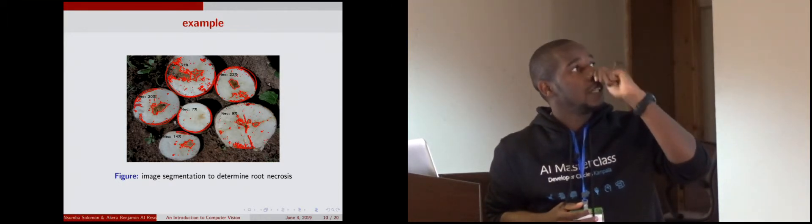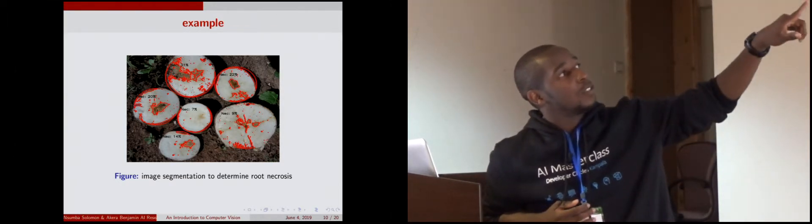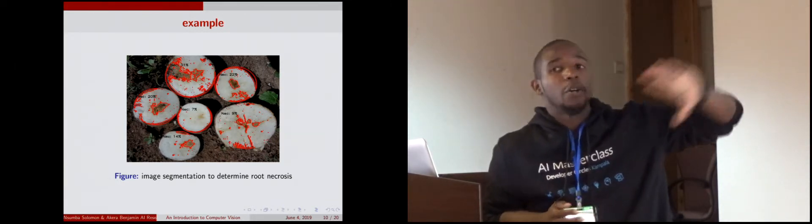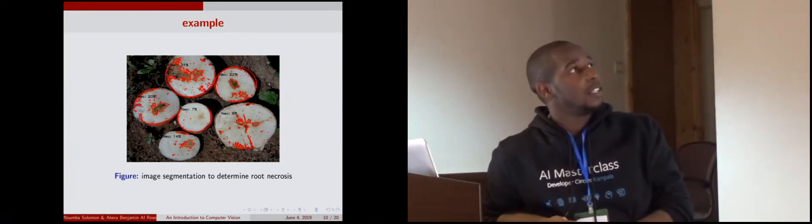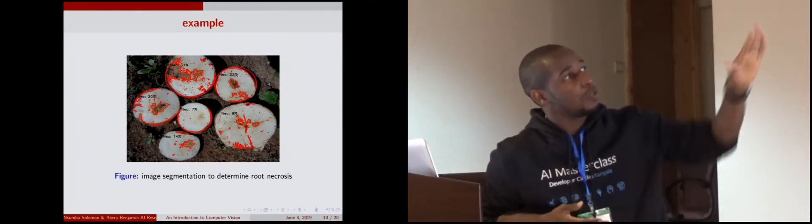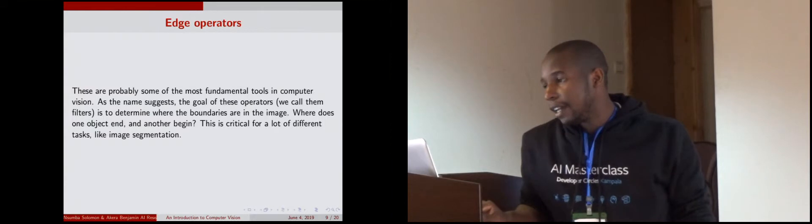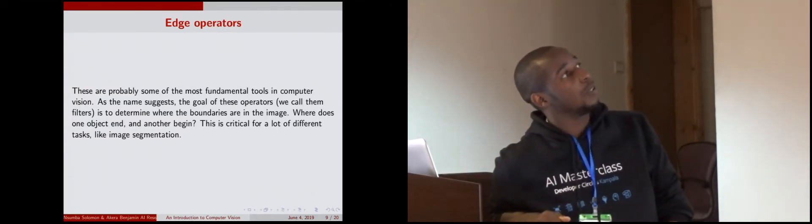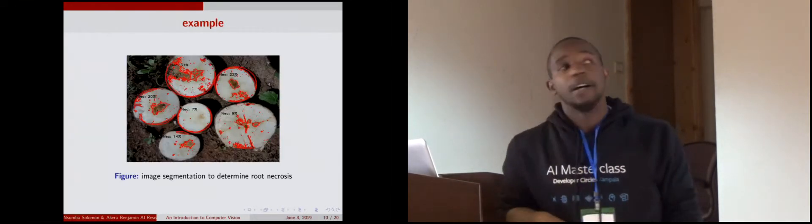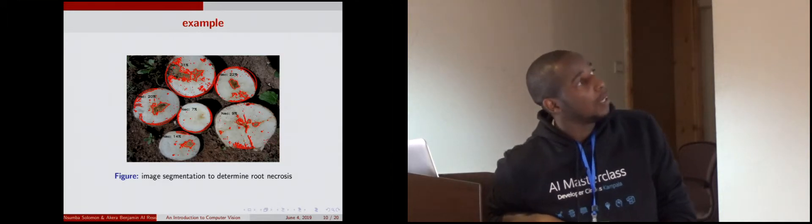When researchers are doing this, they give a given score based on how the whole cross-section of the root is infected. So our task was to try and get percentages for that. You can use edge operators to do this because it's all about segmentation. The other learning scheme is edge detection, same thing as edge operators, but in this case you're trying to do a sketch of any image, finding the different edges that you can get from an image. Then object detection or any other task that involves identifying an image becomes easy.